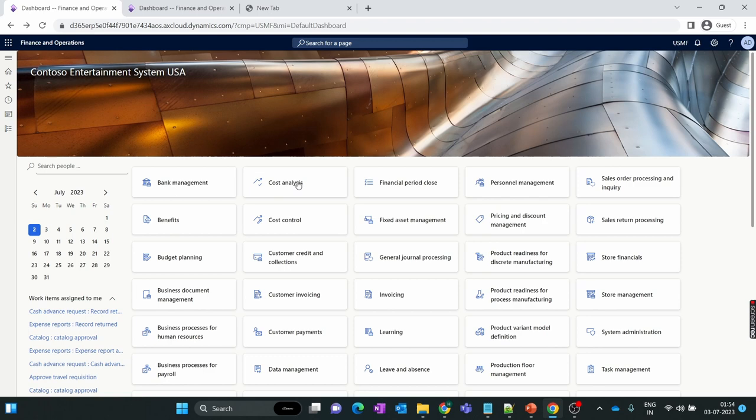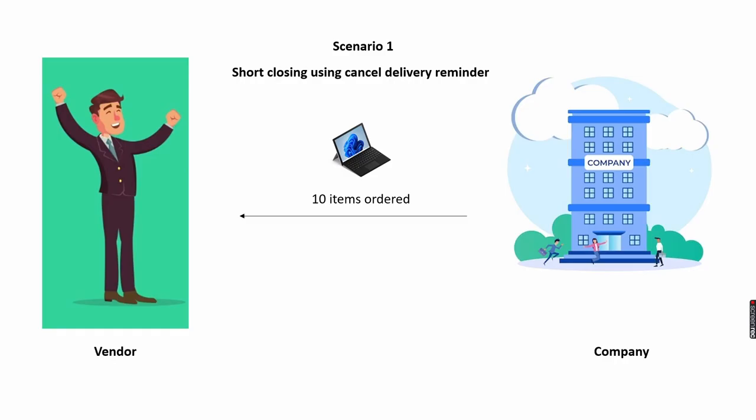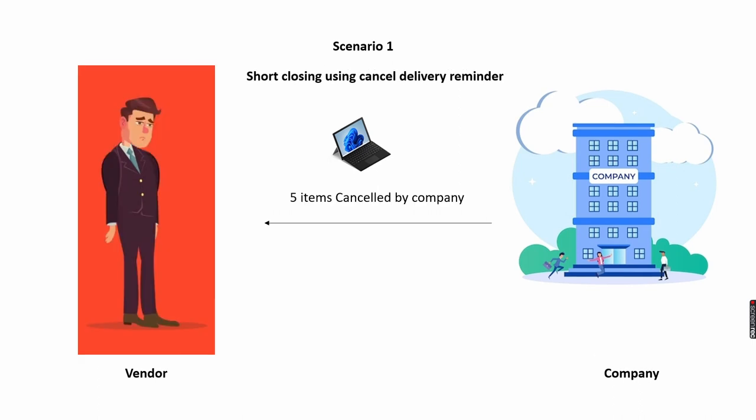Let me explain the scenario we are going to perform in this episode. In our first scenario, our company placed a purchase order for 10 items to the vendor, but the vendor only delivered 5 items in the first shipment and informed us that the remaining 5 items will be sent after a week. However, after 3 days our company decided they no longer require the remaining 5 items. So we will remove the delivery reminder and process the short closing of the purchase order.